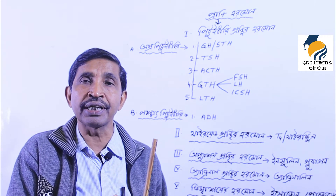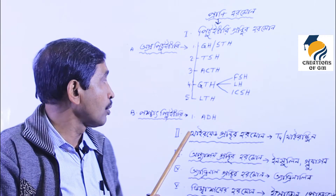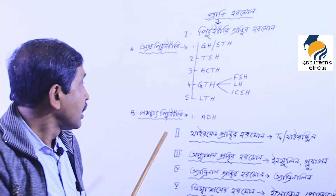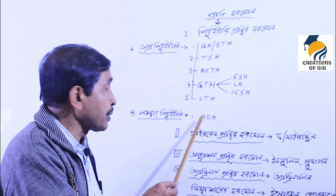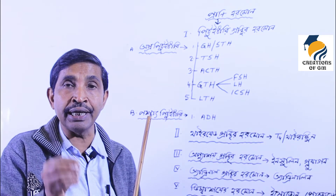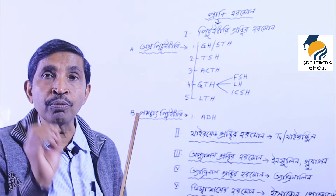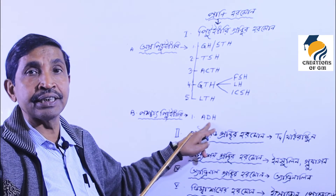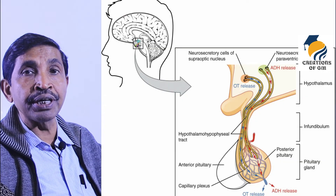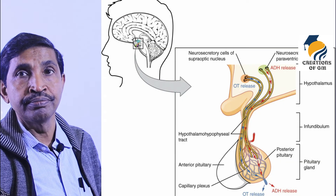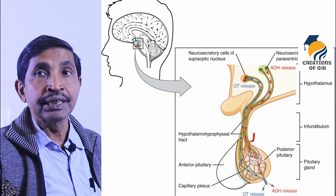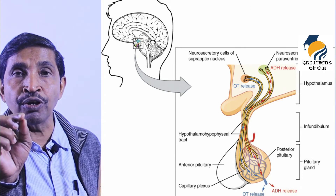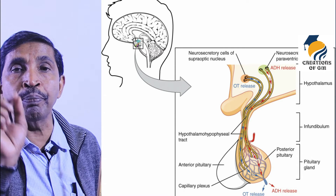Now for the posterior pituitary (neurohypophysis), there are two hormones: vasopressin, also known as ADH — anti-diuretic hormone.